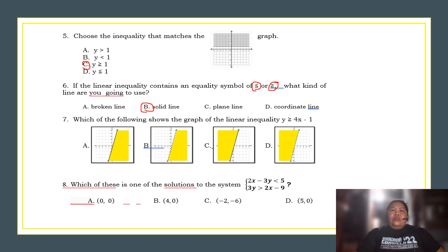Number seven. Which of the following shows the graph of a linear inequality, y is greater than or equal to 4x minus 1? So, the most possible answer is the graph letter C. This one. Just analyze why.